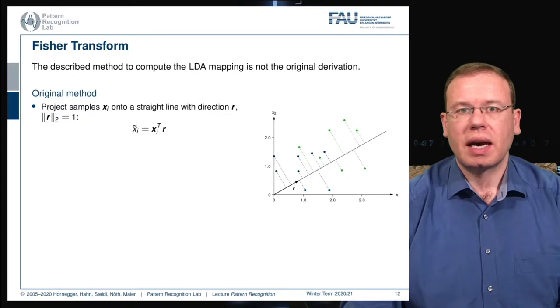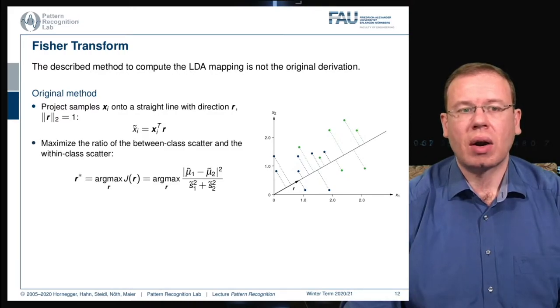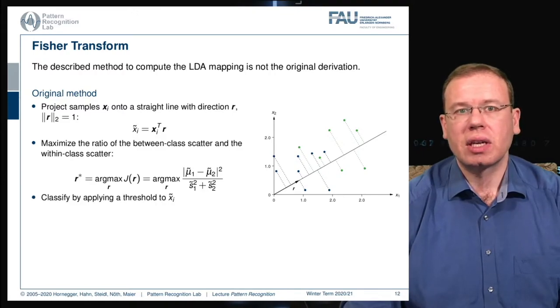We project everything onto this ideal direction R by taking the feature vectors and computing the inner product with R. This gives us a scalar value x̃_i. R is determined as R*, which is the maximization of the ratio of the between-class scatter and the within-class scatter. The between-class scatter is essentially given in this two-class case as the subtraction of the means and the two-norm of this, and the within-class scatter is given by S, essentially derived by the covariance of the individual classes. In the end we apply a threshold on our x̃ which tells us to which class to assign the decision.